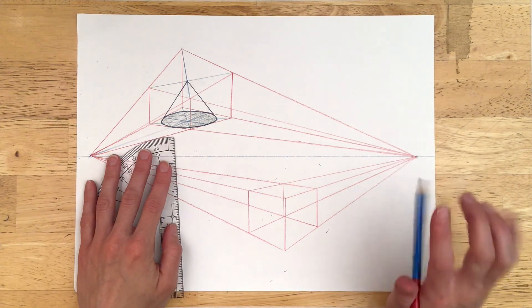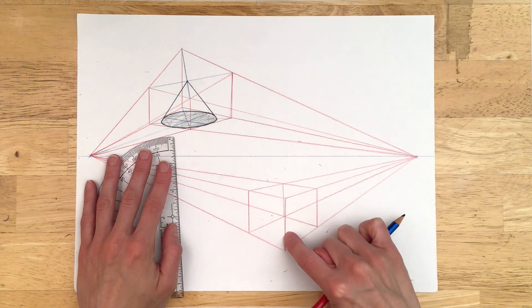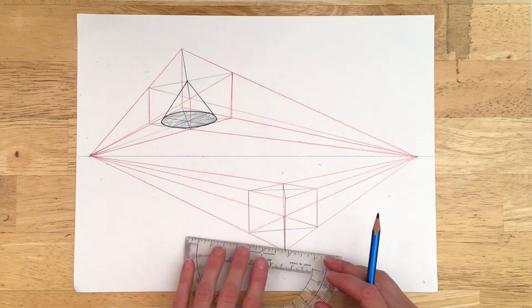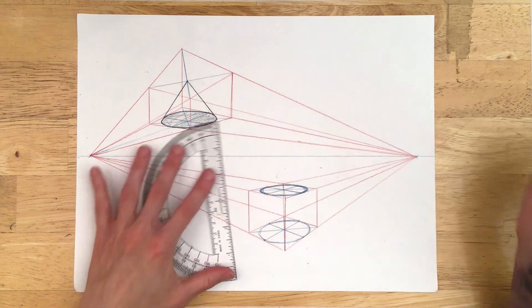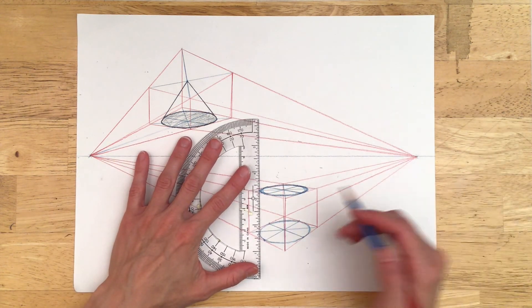For a cylinder, draw two ellipses on opposite sides of each other. Then connect the sides of the two ellipses.